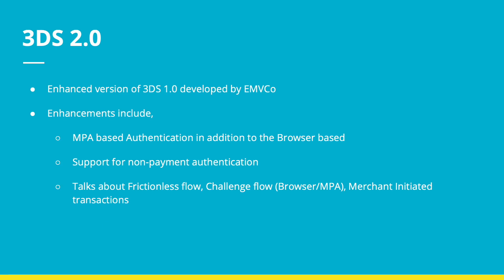What is 3DS 2.0? 3DS 2.0 is an enhanced version of 3DS 1.0 designed and developed by EMV Co. What are the enhancements? 3DS 2.0 puts mobile first.